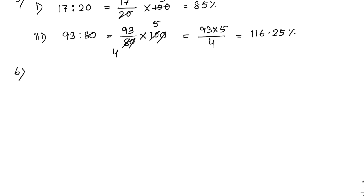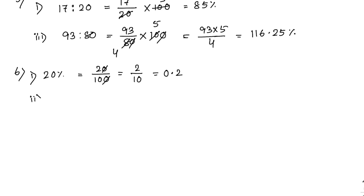Now sum number 6: express the following percentages as decimals. First: 20 percent means 20 by 100, which equals 2 by 10, which is 0.2. Next: 2 percent means 2 by 100, equal to 0.02.